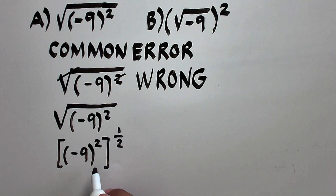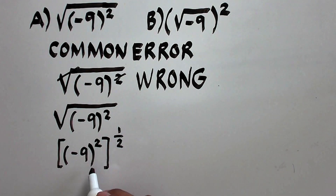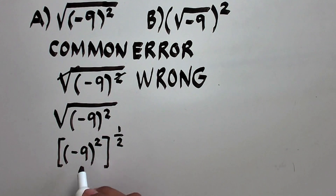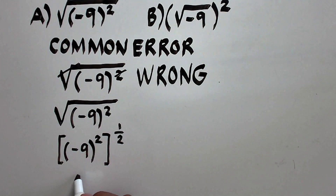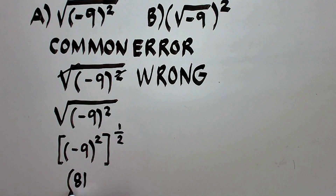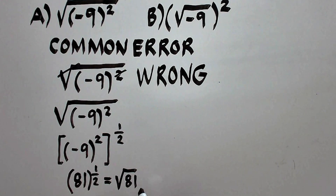Then, by order of operation, when you have two exponents like this — a nested exponent — you perform the calculation on the inside term first. Therefore, the square of negative 9 is negative 9 times negative 9, which is positive 81. Then you raise that to exponent 1/2, and this is just the same as the square root of 81. And the answer for this is, of course, 9.